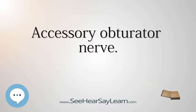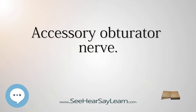In human anatomy, the accessory obturator nerve is an accessory nerve in the lumbar region, present in about 29% of cases. It is of small size and arises from the ventral divisions of the 3rd and 4th lumbar nerves.